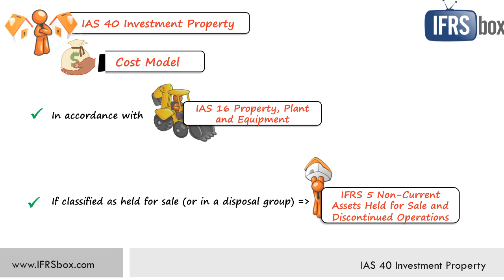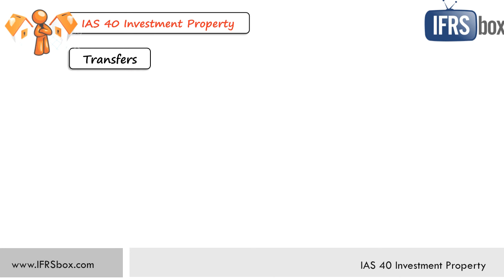Let me mention a few words about transfers of assets to or from investment property. You can do it, but only when there's a change in use. For example, when you start using a building for your own headquarters and you had rented it out previously, then you can transfer it from investment property to property, plant and equipment under IAS 16.